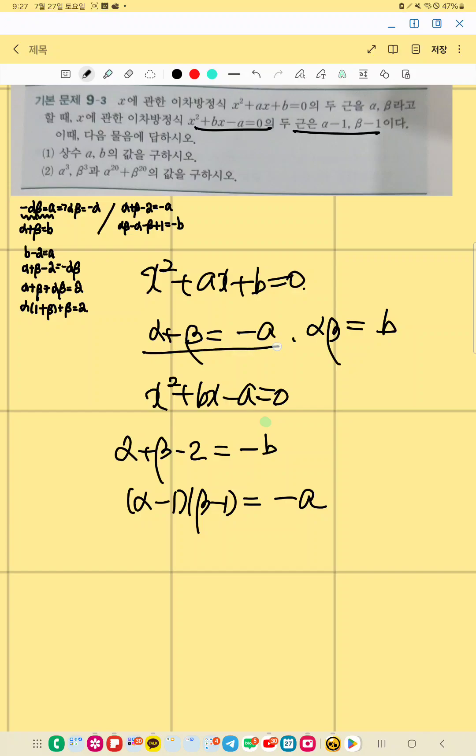So here, plugging in here, A plus 2 equals B, right? So alpha beta minus alpha minus beta plus 1 plus A equals 0. So B plus 2A plus 1 equals 0.